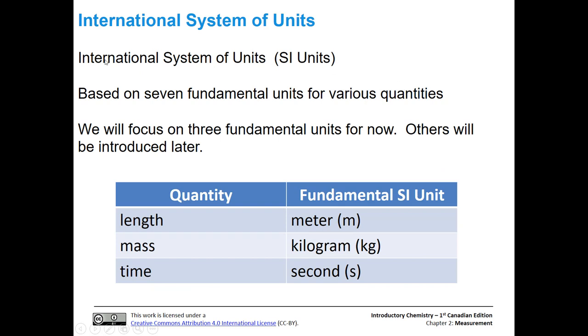The SI, which is the International System of Units, has seven fundamental units that are defined for various quantities. These are used all throughout science. We're going to focus on three fundamental units now, and we'll add some others later. Our three fundamental units have to do with length, mass, and time. For length, our fundamental unit is the meter. For mass, it's the kilogram. Notice that that is not grams, that's kilograms. And for time, it's the second.